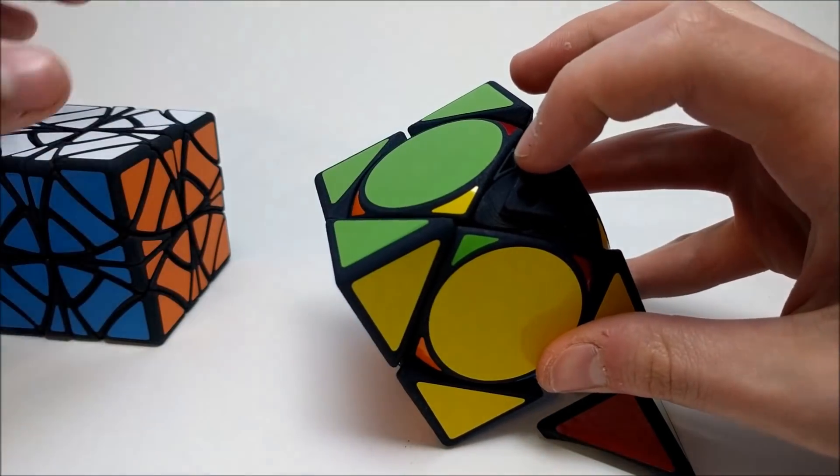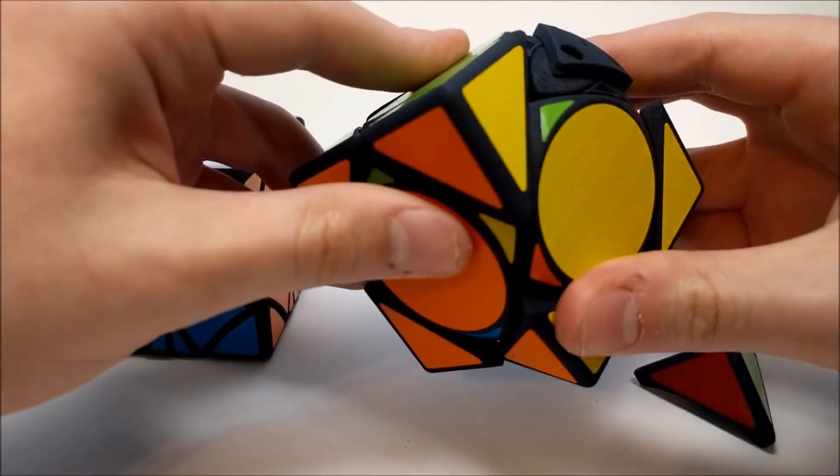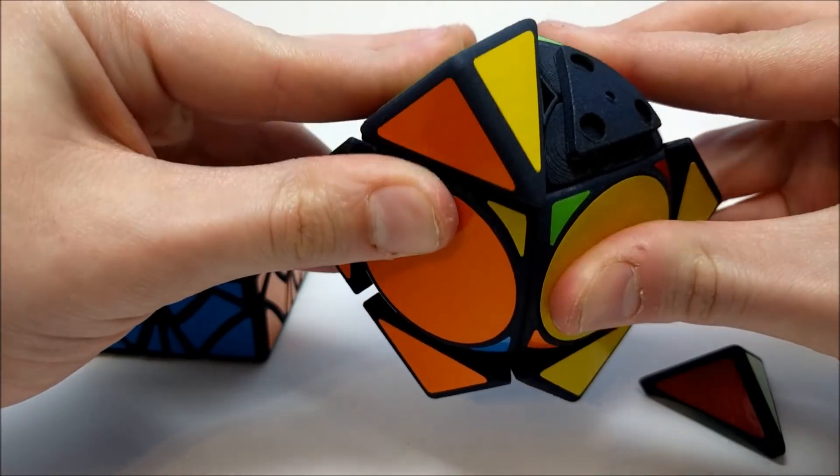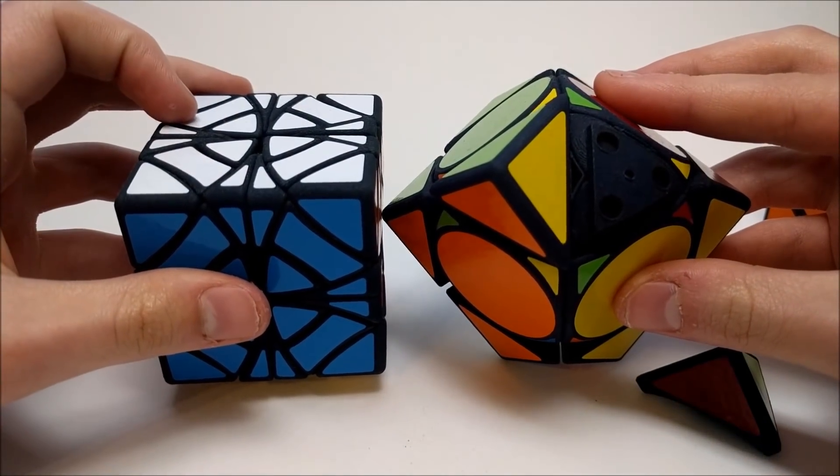So these right here, these tiny little pieces with the holes in them, are these split center pieces right there. So when you actually line up these two right here, if you can see the resemblance between the mechanism.